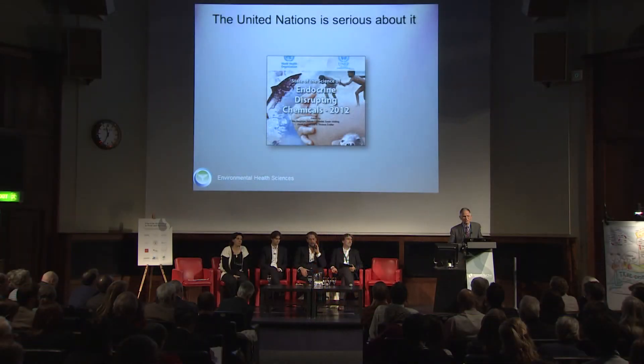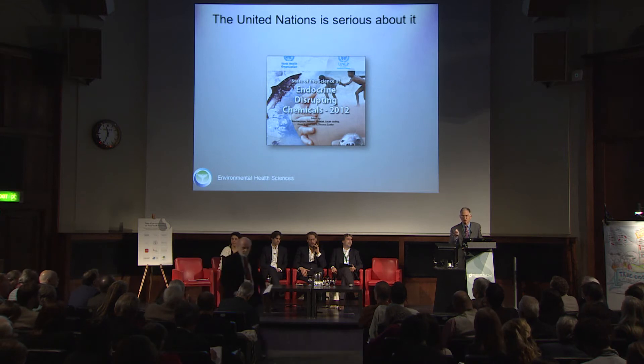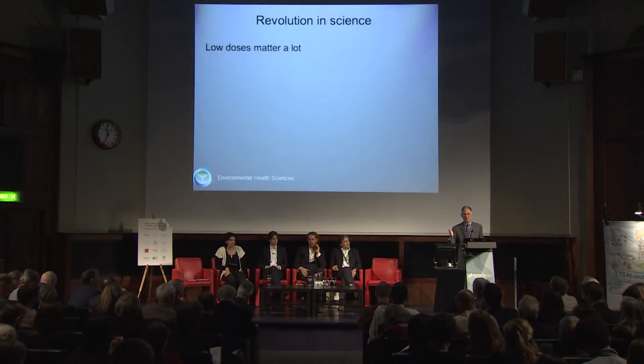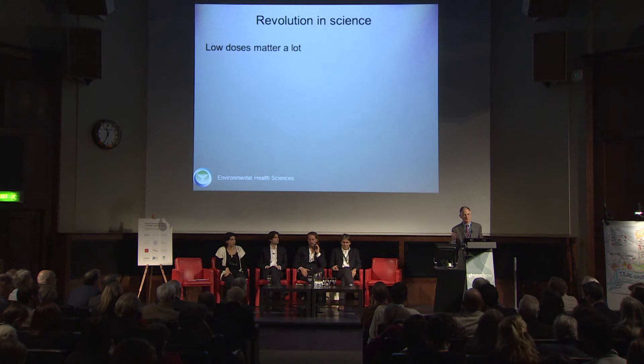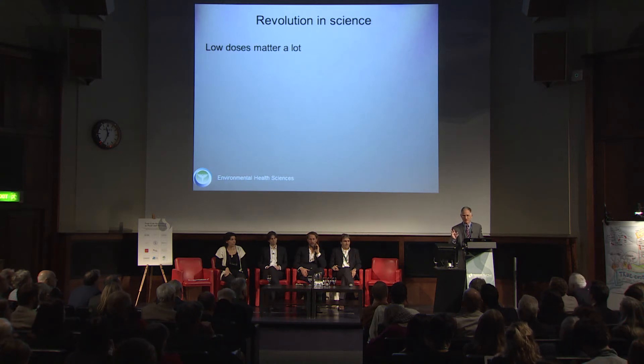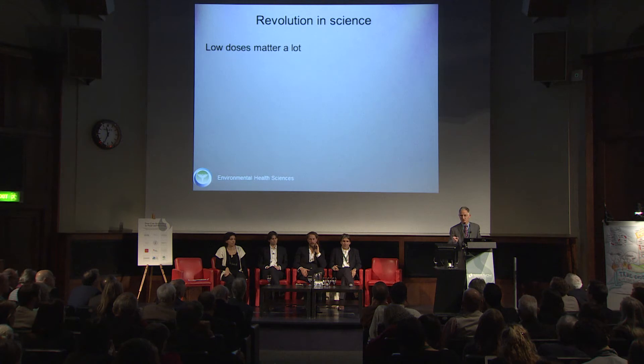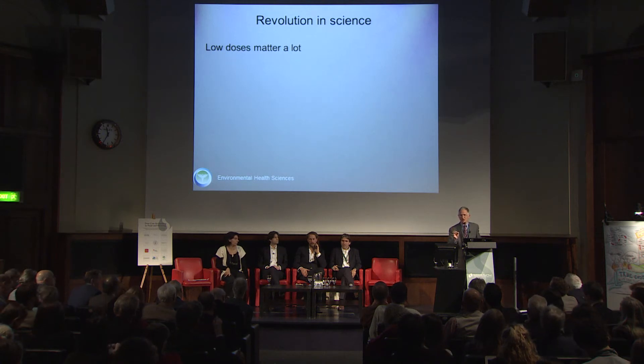The United Nations is serious about this. They published a report in February 2013 saying that endocrine disruption is a global public health threat. The WHO, which is a conservative agency, felt the evidence was strong enough to make that statement. I don't have time to review the tens of thousands of scientific papers published in this field over the last 20 years, but one key point is that low doses matter a lot. The doses at which some of these chemicals are active is in the low parts per billion level.